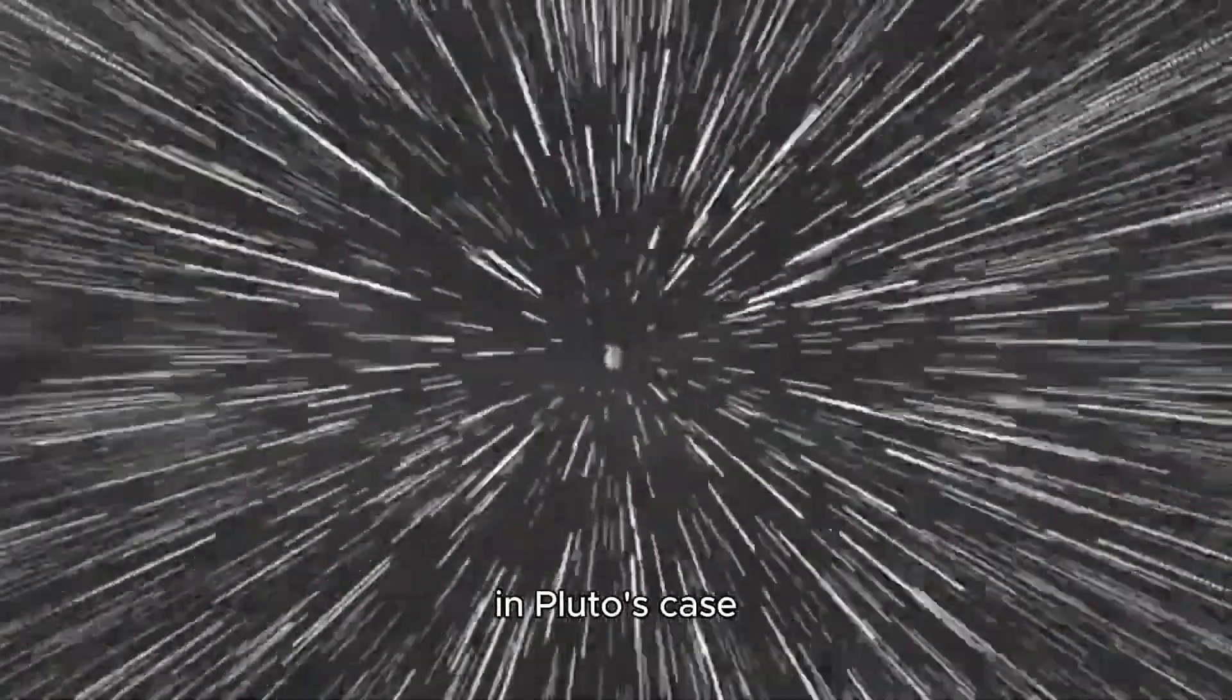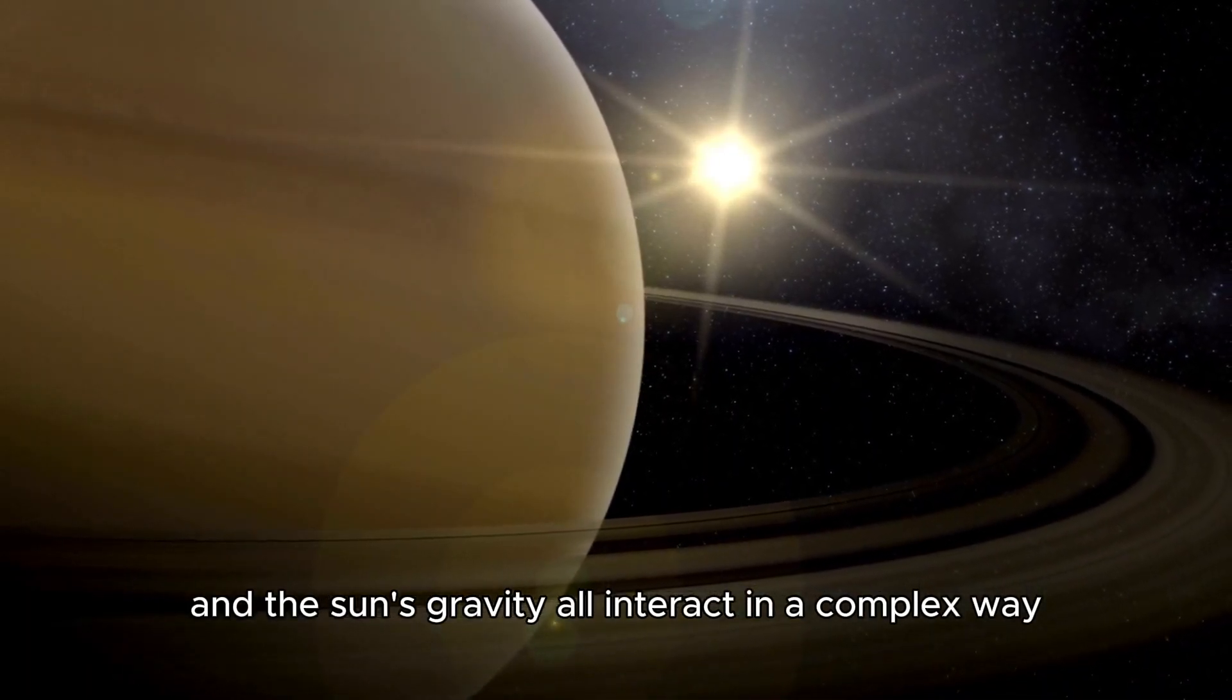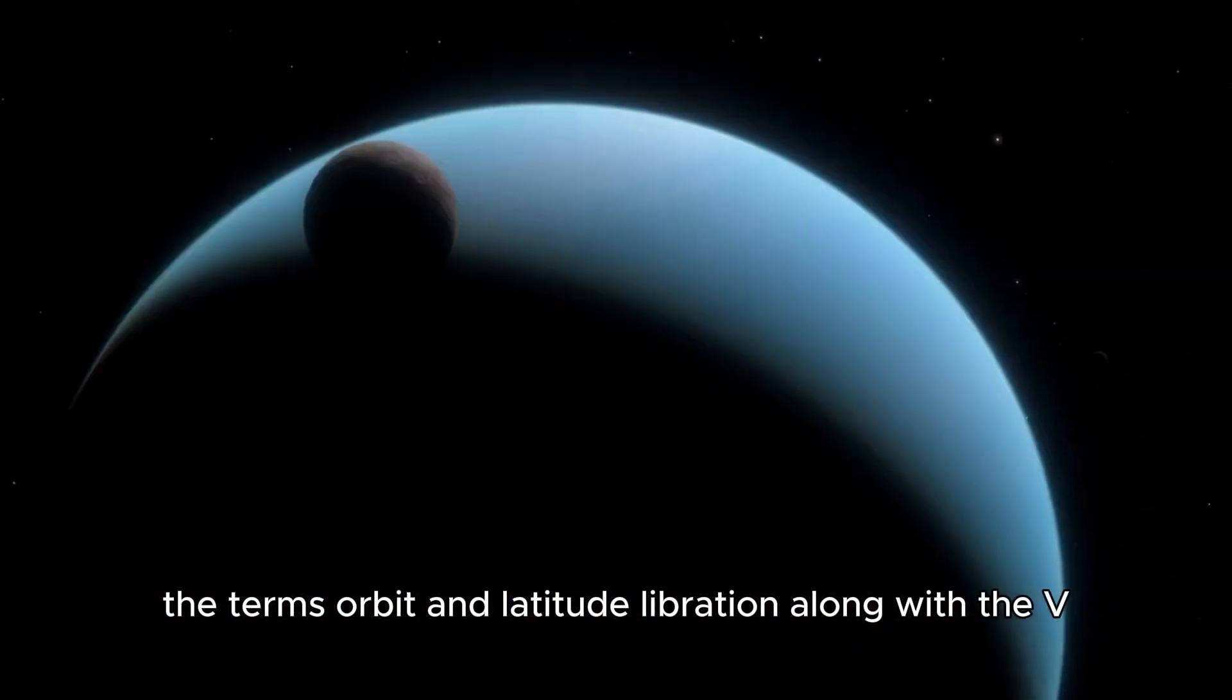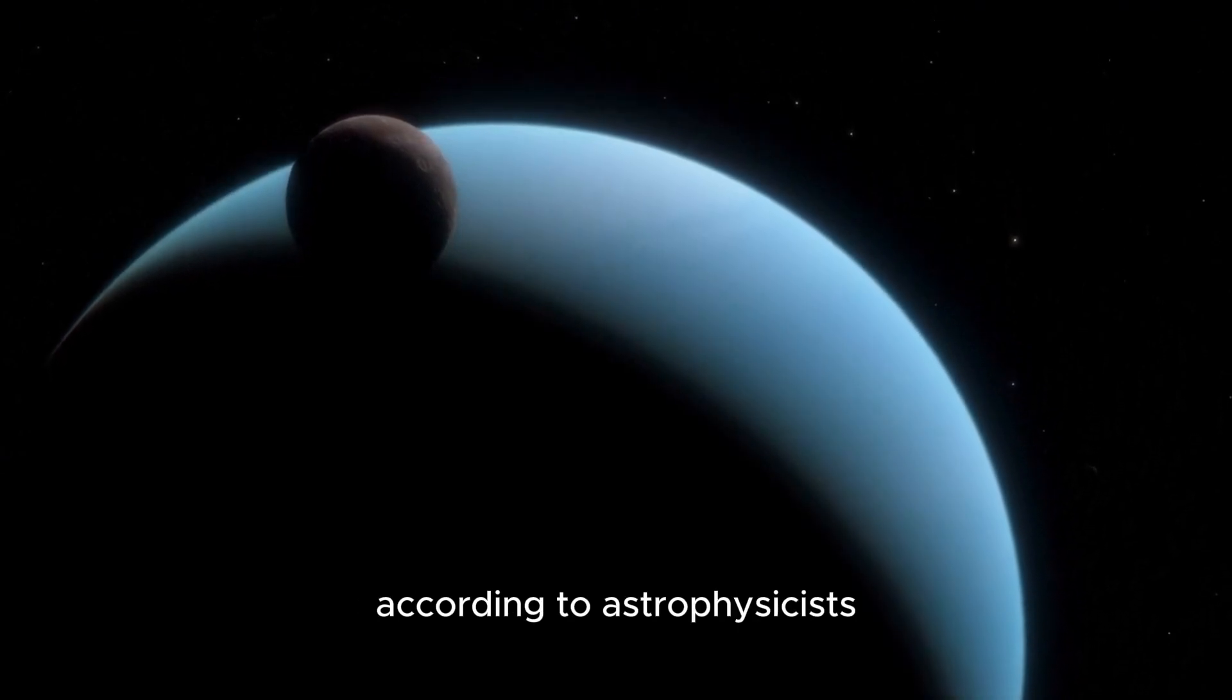In Pluto's case, this problem shows how the paths of Neptune and the Sun's gravity all interact in a complex way. The terms O-libration and latitude-libration, along with the VZK oscillation, are part of this puzzle, according to astrophysicists.